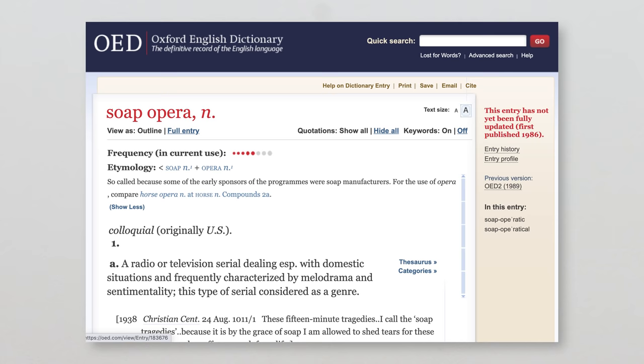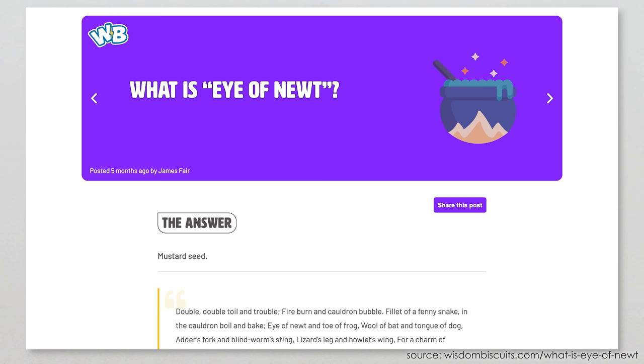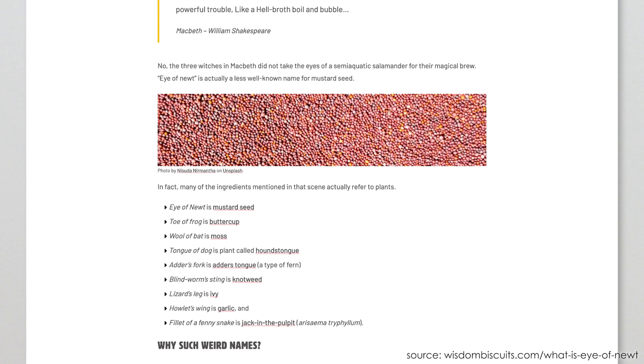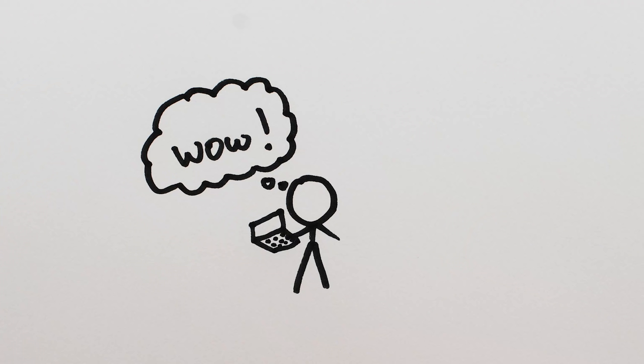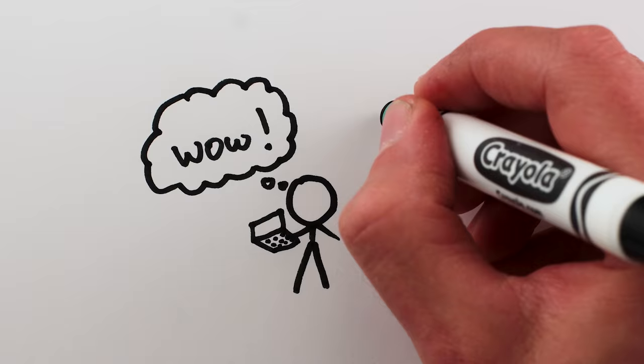My second pause? A tweet about how Eye of Newt, famously used as a witchcraft ingredient in Shakespeare's Macbeth, was actually just a codename for a common kitchen spice. I thought, wow, I never knew that. That's pretty cool. And then immediately, it sounds too perfect. I paused.